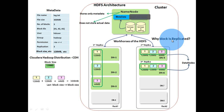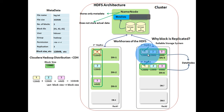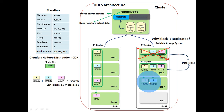Why are blocks replicated? Replication makes HDFS a reliable storage system. If blocks are lost or get corrupted, replicas of these blocks are available in different data nodes. For example, if block ID 1 of log.txt is lost or corrupted, replicas are available in data nodes 5 and 6. And if a data node itself is down, replicas of all blocks in that node are available in different data nodes. If data node 5 is down, replicas are available in data nodes 1, 2, 3, and 6. Using these replicas, lost blocks are recreated until the number of replicas equals the replication factor.